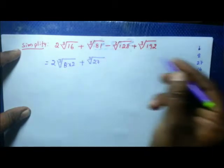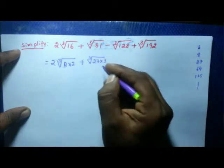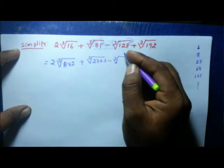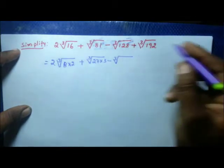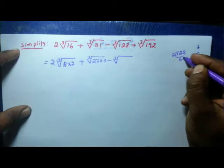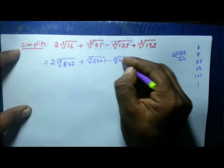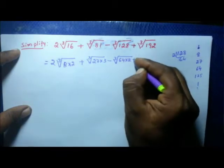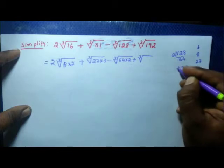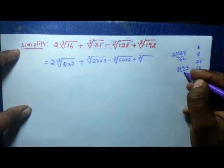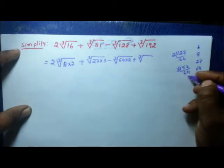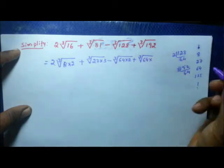So we write cube root of 27 into 3. Minus cube root of 128. For 128, divide by 2 repeatedly: 64 is also a cube number, so we write 64 into 2. Plus cube root of 192. For 192, it is divisible by 3: dividing gives 64 into 3. So 64 is a cube number and 3 is the remaining number.